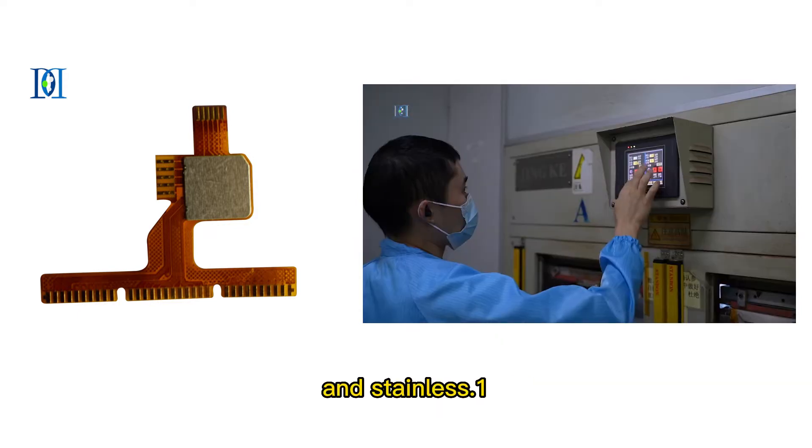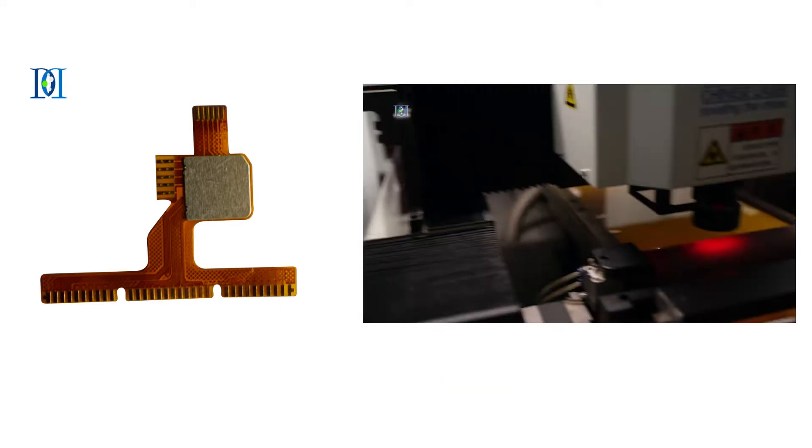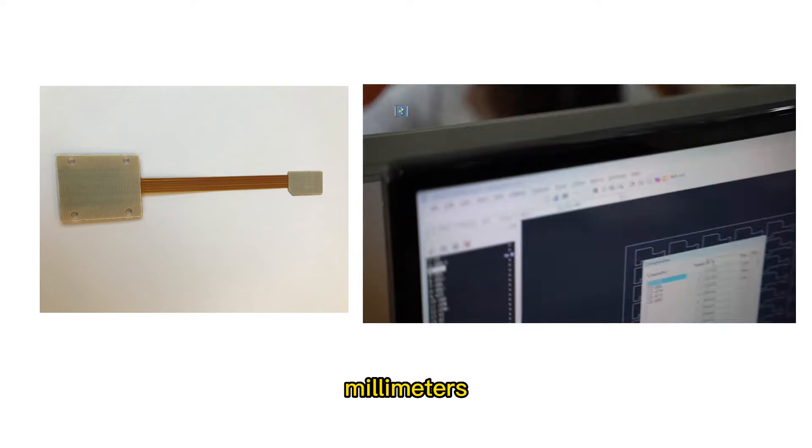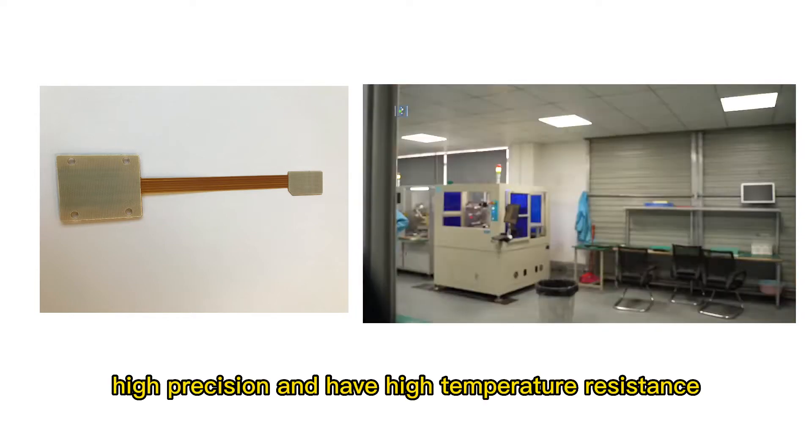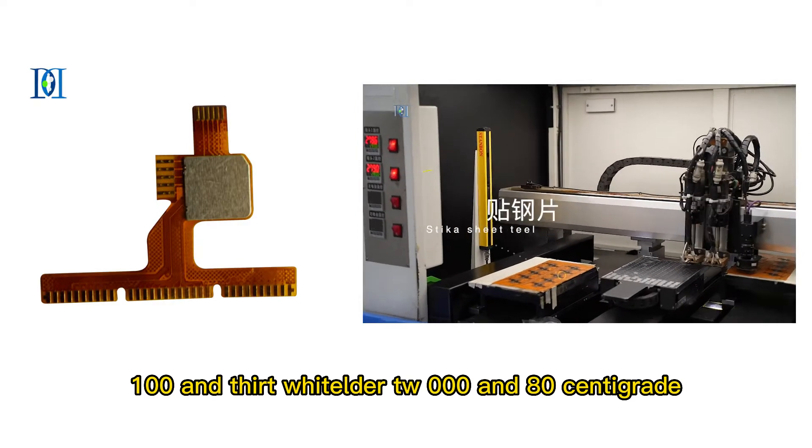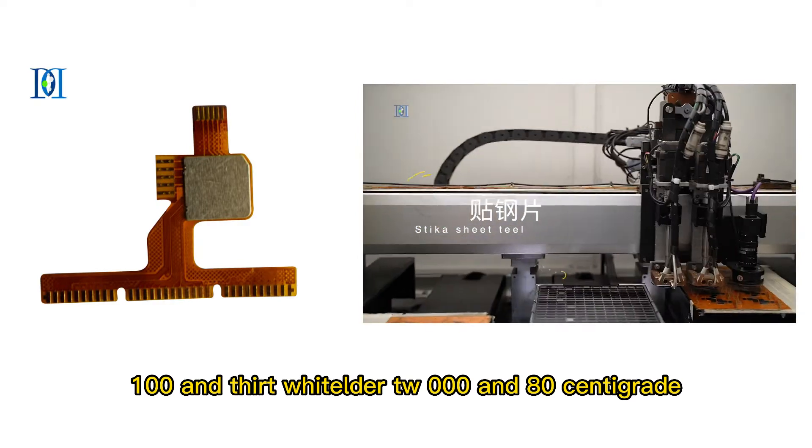1. Polyimide PI stiffener. The tolerance can be controlled plus minus 0.03 mm, high precision and has high temperature resistance, 132 to 180 degrees Centigrade.